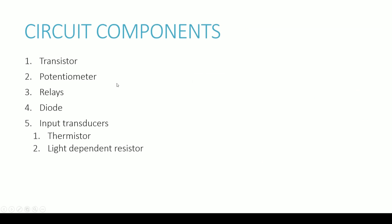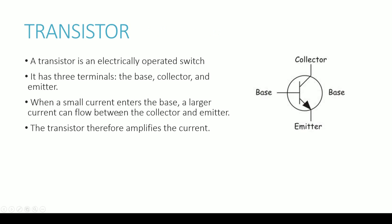Now we're going to look at some critical circuit components. The first is the transistor, which is an electrically operated switch. It has three terminals: the base, the collector, and the emitter. When a small current enters through the base, a larger current can flow between the collector and the emitter. Basically the transistor can amplify current — you only need a small amount through the base to activate it. A transistor can essentially operate as a switch.